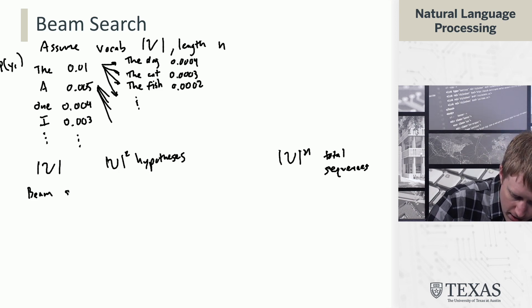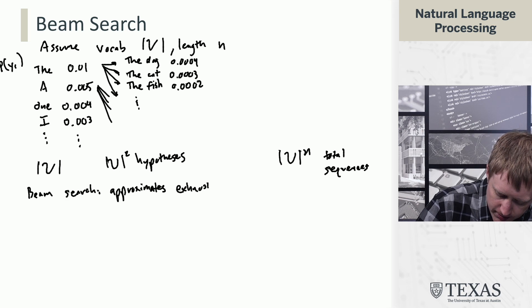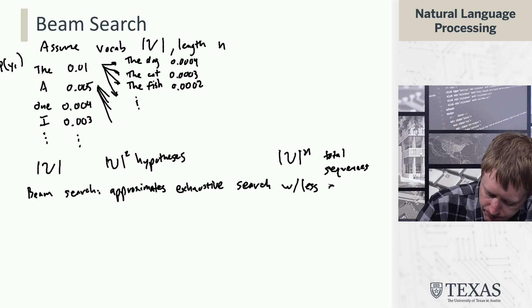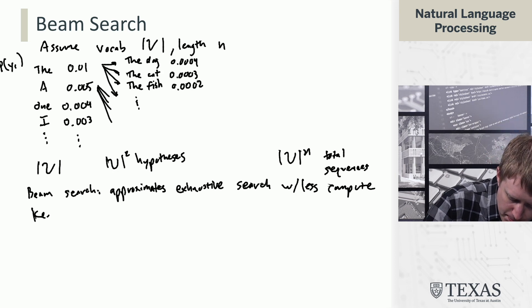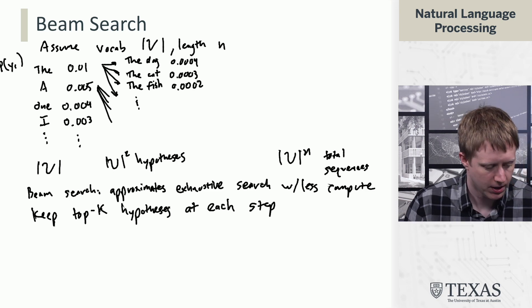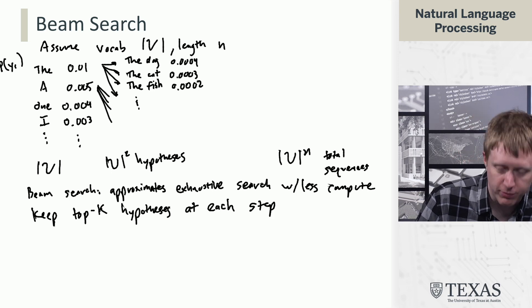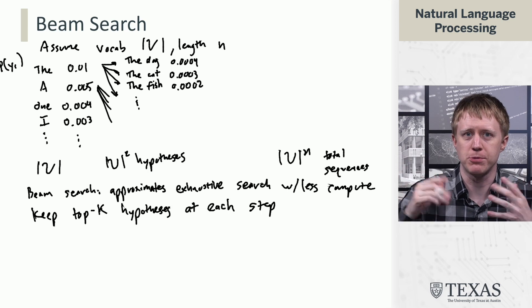Beam search is going to approximate exhaustive search but with less compute. Basically, the idea is keep the top k hypotheses at each step.